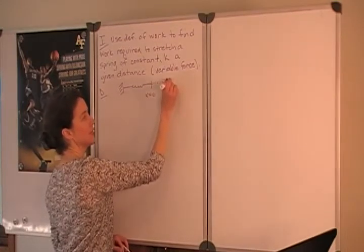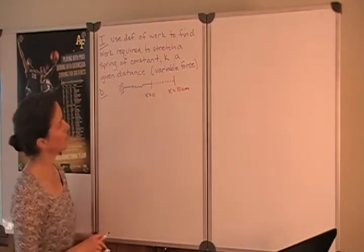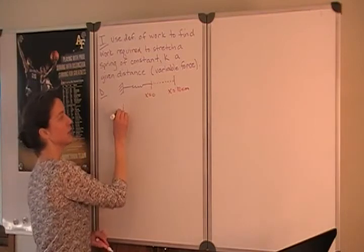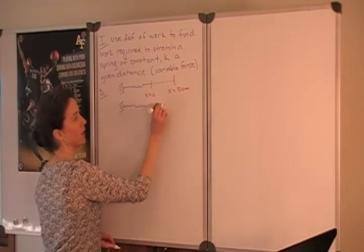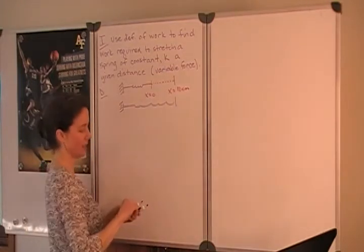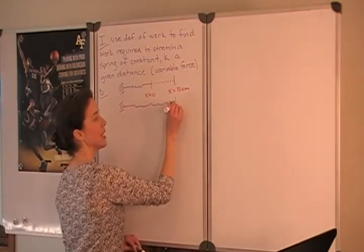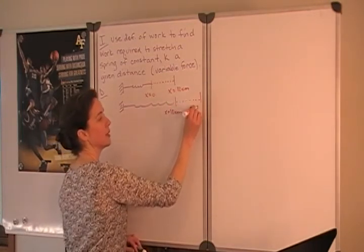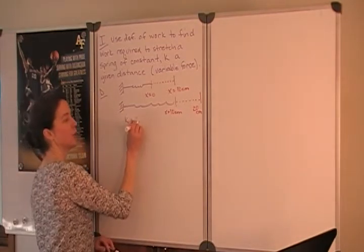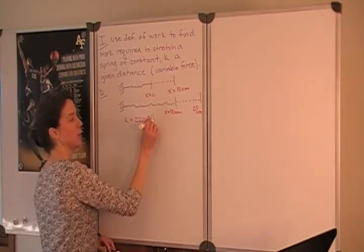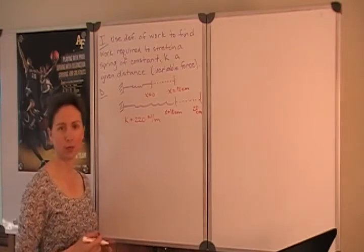We're asked how much work it takes to stretch that spring 10 centimeters. In the second case the spring is already starting stretched. So it's already stretched out to 10 centimeters and we are asked how much work it takes to stretch it out to 20 centimeters. We are given the spring constant K of 220 newtons per meter, meaning it takes 220 newtons of force to stretch this particular spring one meter.